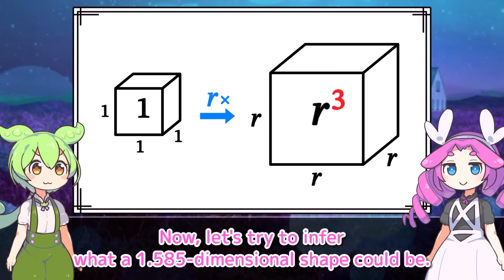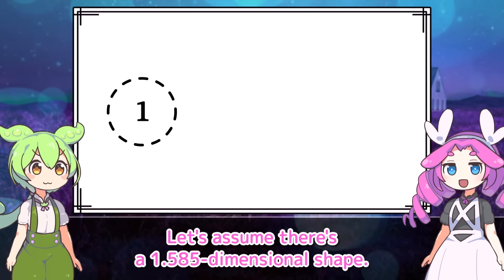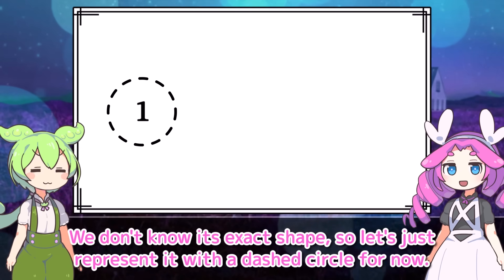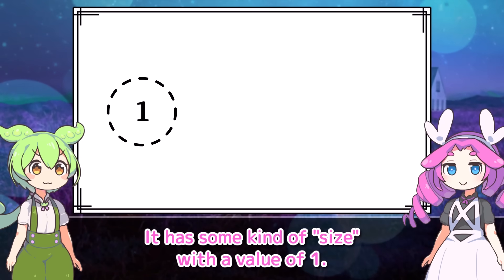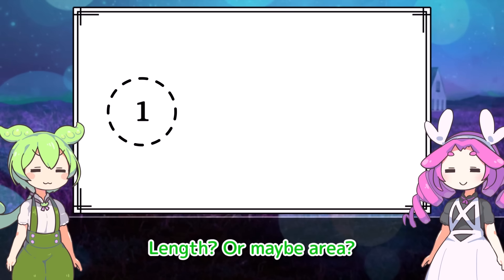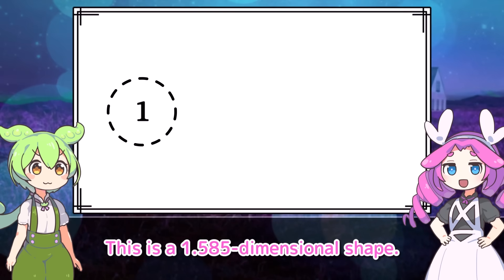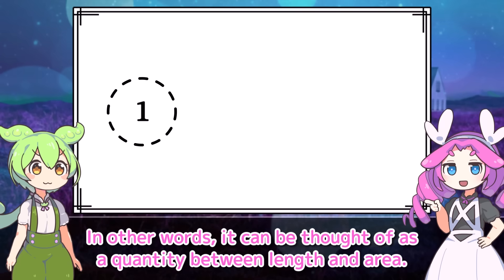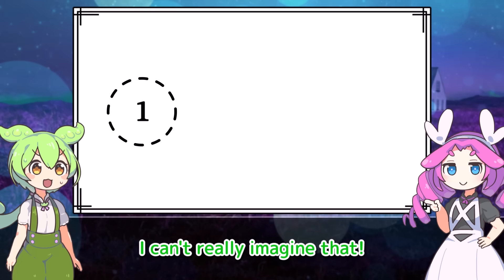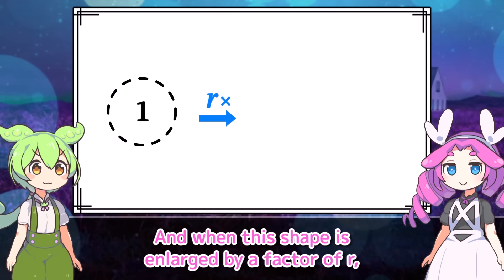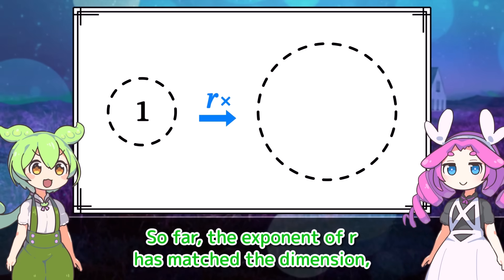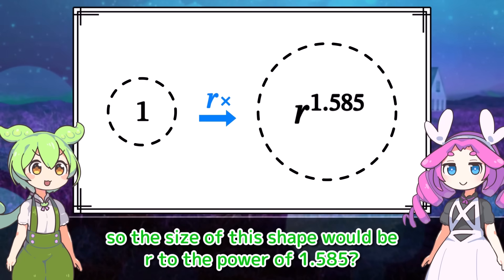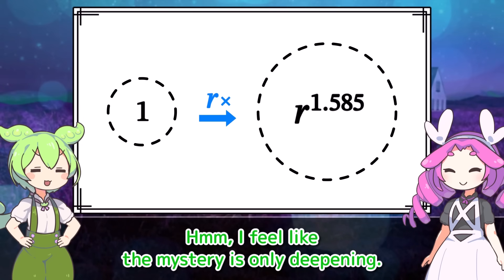It seems like you're starting to get it. Now let's try to infer what a 1.585 dimensional shape could be. Let's assume there's a 1.585 dimensional shape — we don't know its exact shape, so let's represent it with a dashed circle for now. It has some kind of size with a value of 1. This is a 1.585 dimensional shape; its size is a quantity that lies between one dimension and two dimensions — in other words, between length and area. When this shape is enlarged by a factor of r, its size would be r to the power of 1.585.